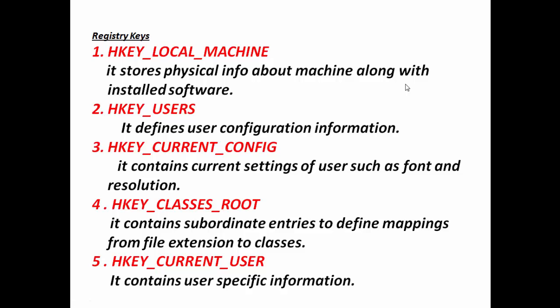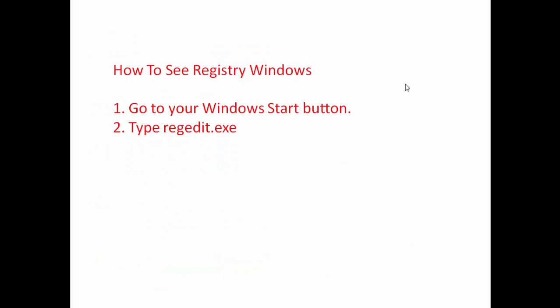There are five types of registry keys available in Windows. First is HKEY_LOCAL_MACHINE, which stores physical information about the machine along with installed software. Second is HKEY_USERS, which defines user configuration information. Third is HKEY_CURRENT_CONFIG, which contains current settings such as font and resolution. Fourth is HKEY_CLASSES_ROOT, which contains subordinate entries to define mapping from file extension to classes. Fifth is HKEY_CURRENT_USER, which contains user-specific information.